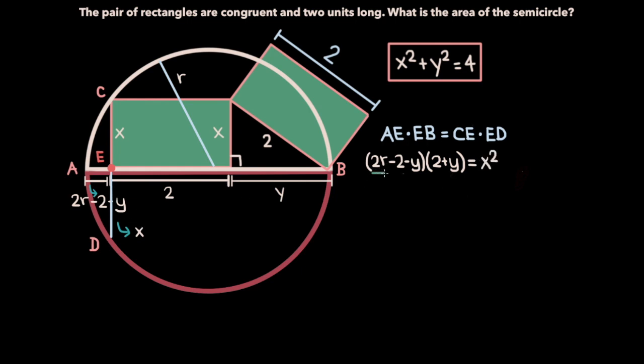Let's first multiply this 2R term with the 2 plus y term. So we have 2R times 2 plus y, and now let's multiply the minus 2 minus y term with the 2 plus y term once again. So we get minus 2 times 2, so minus 4, then we have minus 2 times plus y, so minus 2y, then we have minus y times 2, so minus 2y again, then we have minus y times plus y, so minus y squared. Now we can combine the minus 2y terms to get minus 4y, and this left-hand side is equal to x squared.